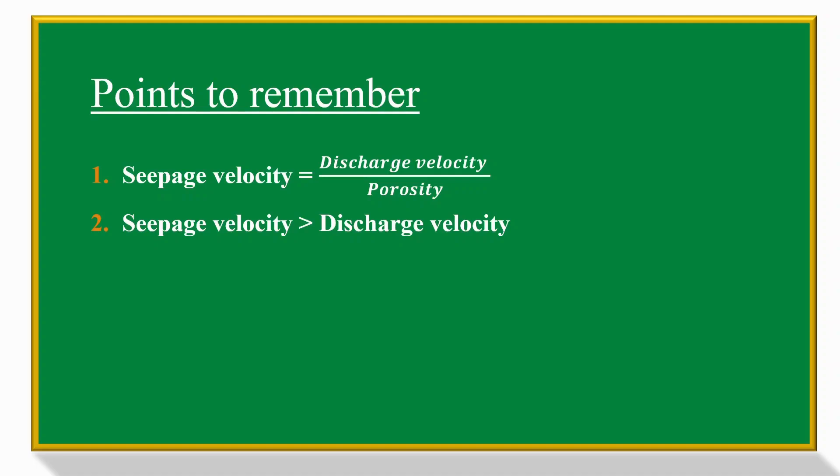In the case of seepage velocity, we are only considering the area formed by the void spaces. It is almost like if there are too many crowded people and you keep the door wide open, people will move with a normal speed. Whereas, if you keep the door half closed, people will start rushing through the half-open door. That is why seepage velocity is greater than discharge velocity—because you are reducing the area of cross section for the flow to happen.